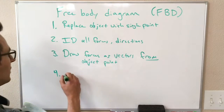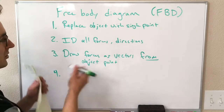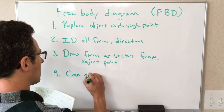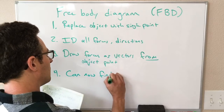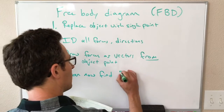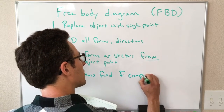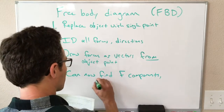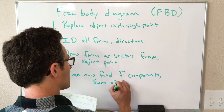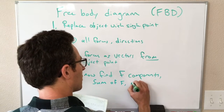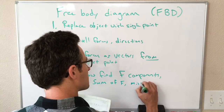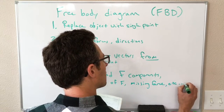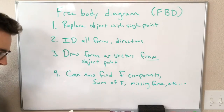Step four is to use the free body diagram to do something. That could be finding the components of the forces, finding the sum of the forces, finding a missing force, or whatever else the question asks for.